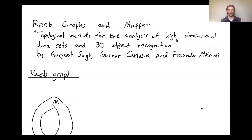Hello everybody. I'm Henry Adams from Colorado State University, and today I wanted to give an introduction to the mapper algorithm in topological data analysis. The mapper algorithm was introduced in the paper 'Topological Methods for the Analysis of High-Dimensional Datasets and 3D Object Recognition' back in 2007, written by Gurjeet Singh, Gunnar Carlsson, and Facundo Mémoli.